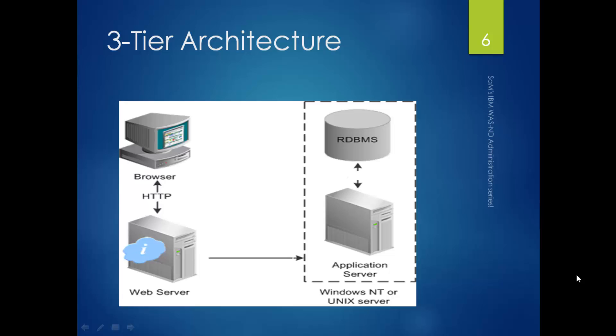The application server handles all the dynamic requests and serves them. It also has a connection to your application database. If someone wants to do some sort of querying on the DB, the application server does the job — it fires the query to the database, collects the result or output from the DB, and shows that to the user via the browser. So this is the three-tier architecture in middleware. Make sure you have this picture in your mind.